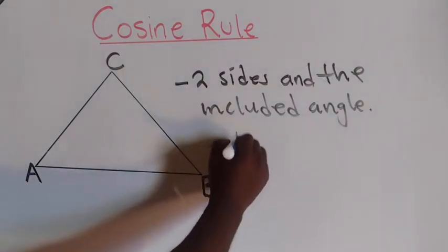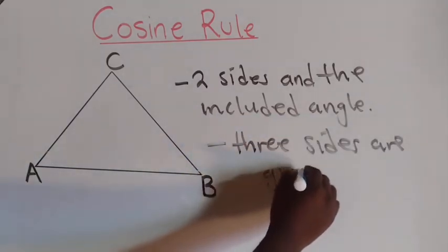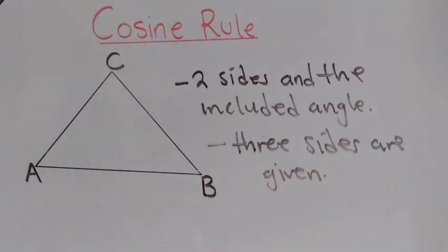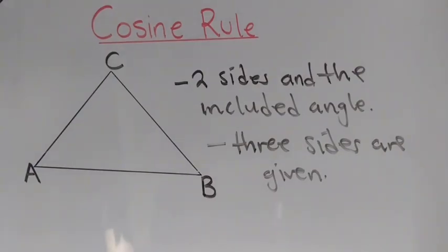The second condition is that all three sides are given. So these are what you must take note of: number one, two sides and the included angle are given — meaning they want you to find the third side. Number two, three sides are given and no angle is given — meaning they want you to find an angle.